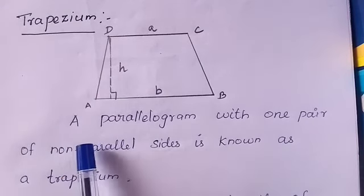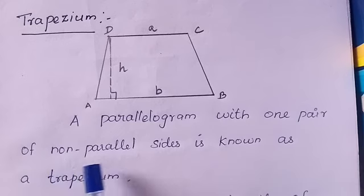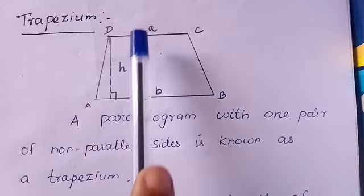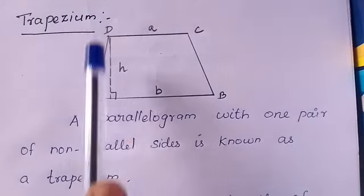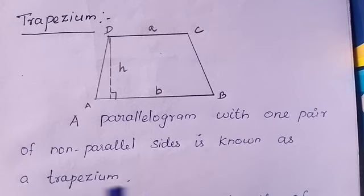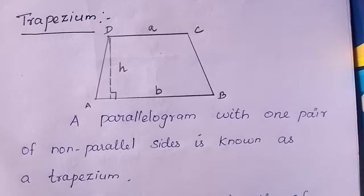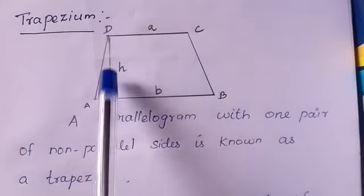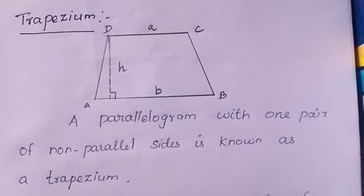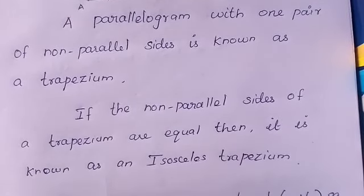Trapezium: a quadrilateral with one pair of non-parallel sides is known as a trapezium. Here, AB and CD are the parallel sides, but BC and AD are not parallel. The distance between the parallel sides is the height of the trapezium.